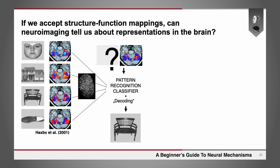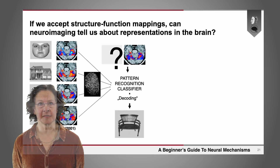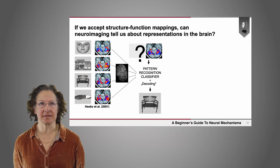If we accept structure-function mappings, can neuroimaging tell us about representations in the brain? There is evidence that it can. With recent techniques like multivariate pattern analysis, we've seen that the voxels in neuroimaging data show different patterns in the brain that correspond to different categories of objects.